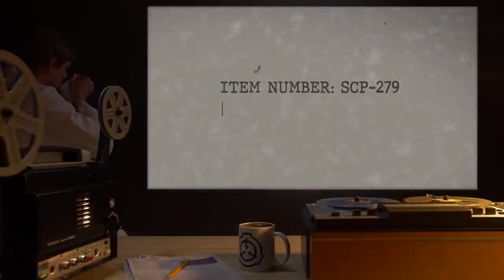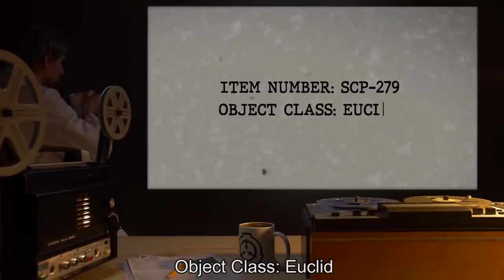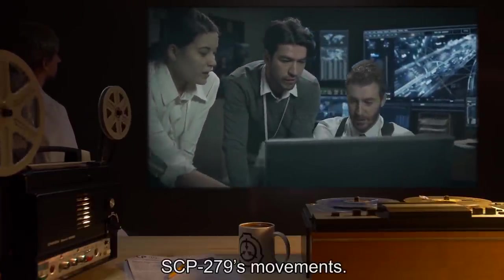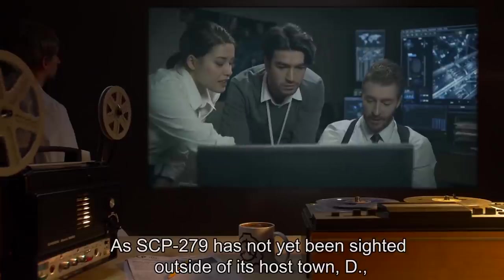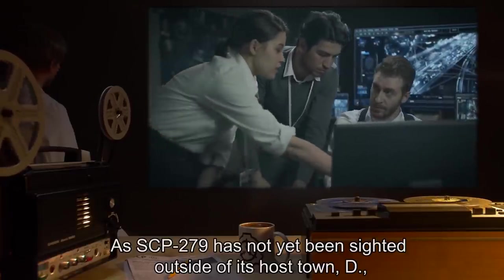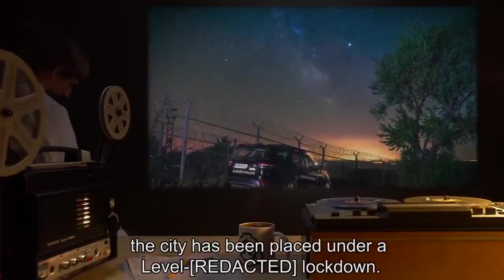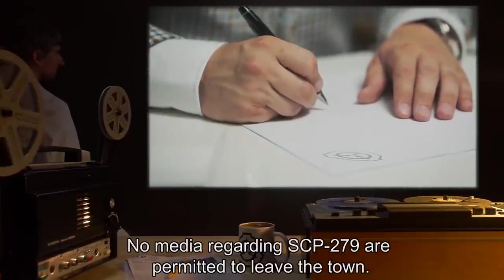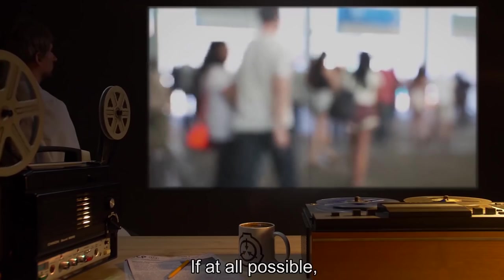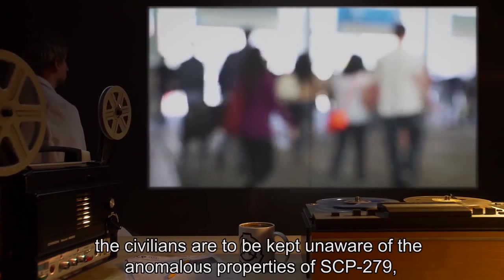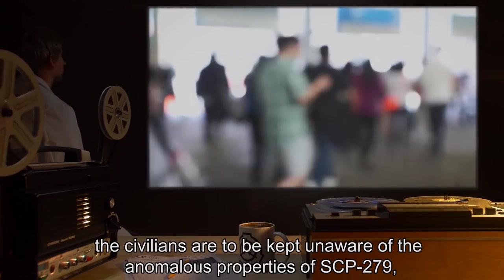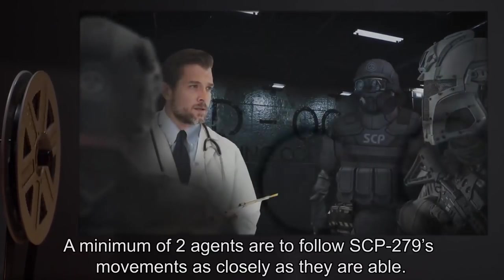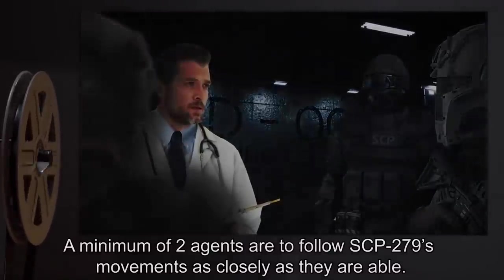Item number SCP-279, Object Class Euclid. Special Containment Procedures: There is no known way of inhibiting SCP-279's movements. As SCP-279 has not yet been cited outside of its host town [REDACTED], the city has been placed under a Level [REDACTED] lockdown. No media regarding SCP-279 are permitted to leave the town. If at all possible, the civilians are to be kept unaware of the anomalous properties of SCP-279, as well as the fact that their city is being monitored. A minimum of two agents are to follow SCP-279's movements as closely as they are able.